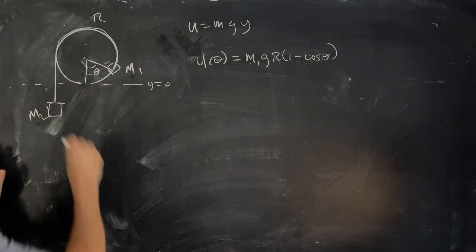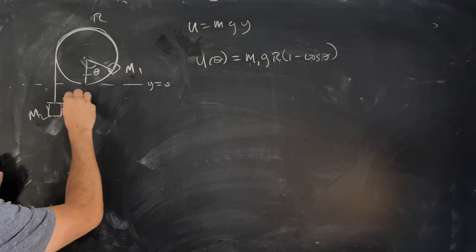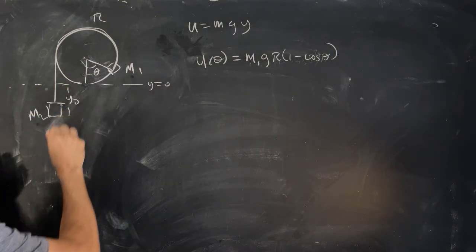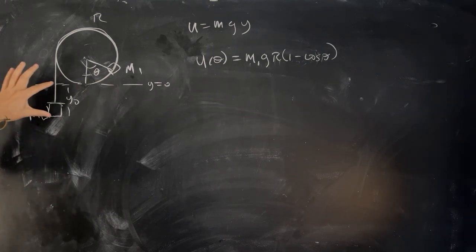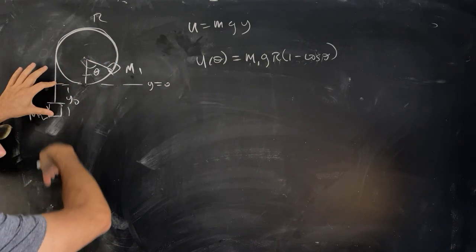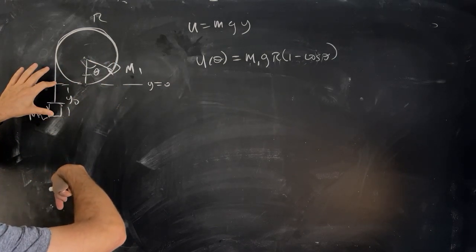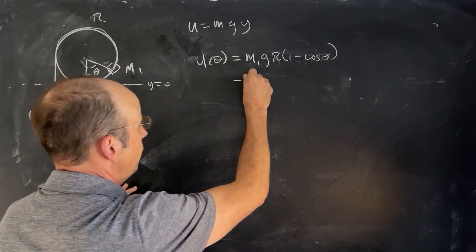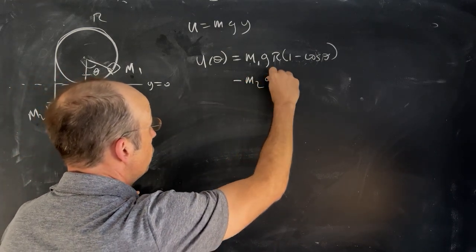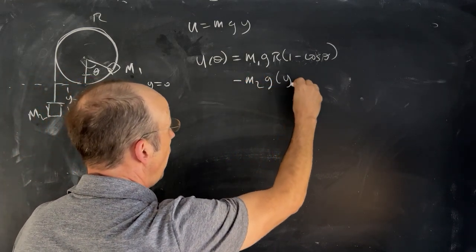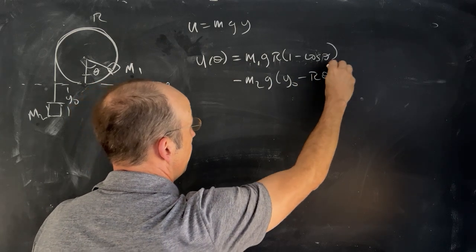And then this one, let's say that this starts off at a position y zero, which is probably a negative number. And then as theta increases, this is going to move down. So it's going to get more negative. So I can write this as minus m2 g y zero minus R theta.